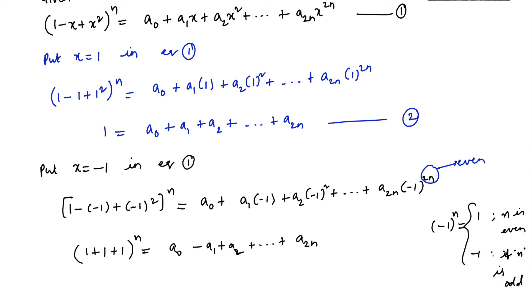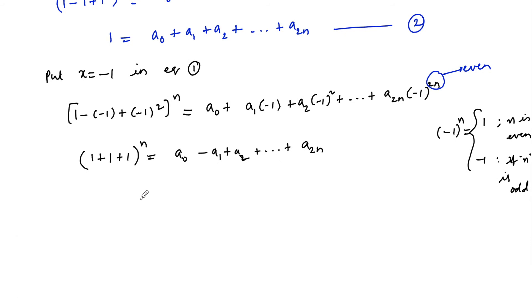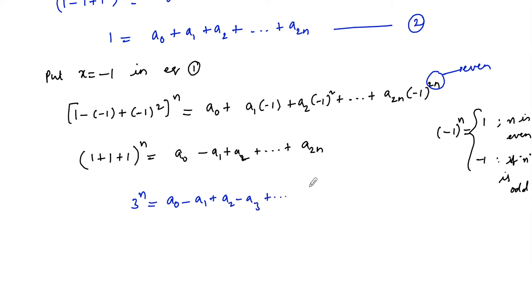So 3ⁿ = a₀ - a₁ + a₂ - a₃ + ... + a₂ₙ. Let us consider this to be Equation 3.